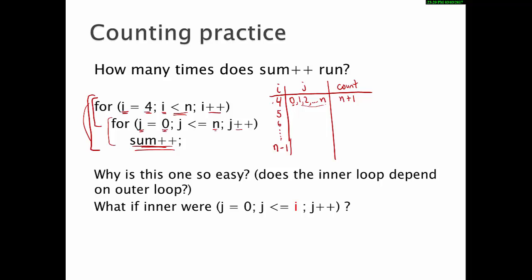So for each of these values of i, this inner loop is going to run here. So let's go back to the i equals 4 case. When i is 4, what does j do? Well, j starts at 0, and it's going to increment every time until it hits n.